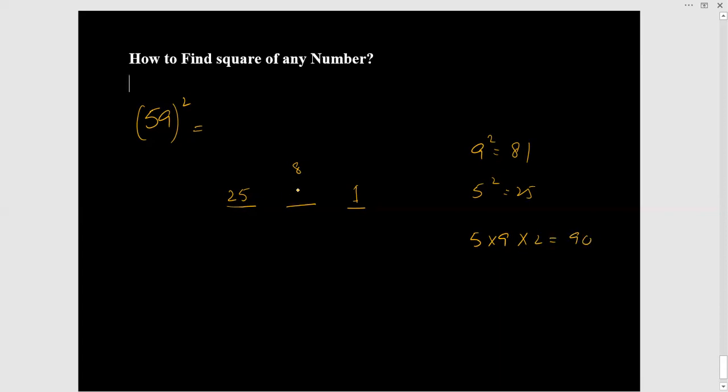Put 90 over there, and then 90 plus 8 is 98. So put 9 there. 9 plus 25, that is 34.